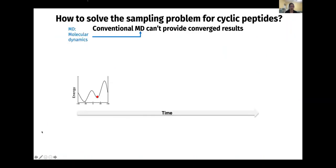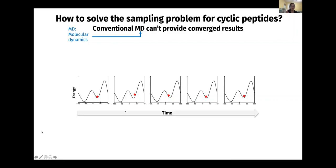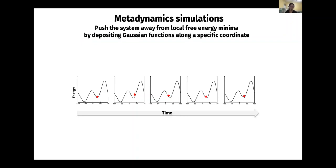The first problem is that your simulation might get stuck. Assuming here is a simplified underlying free energy profile and you start at 60 degrees, at this temperature it's going to take a very long time to cross the barrier. We use a technique called metadynamics simulation, where we push the system away from local free energy minima by depositing repulsive potential along specific coordinates. What we're doing is playing a game with the simulation to force it to explore conformational space.